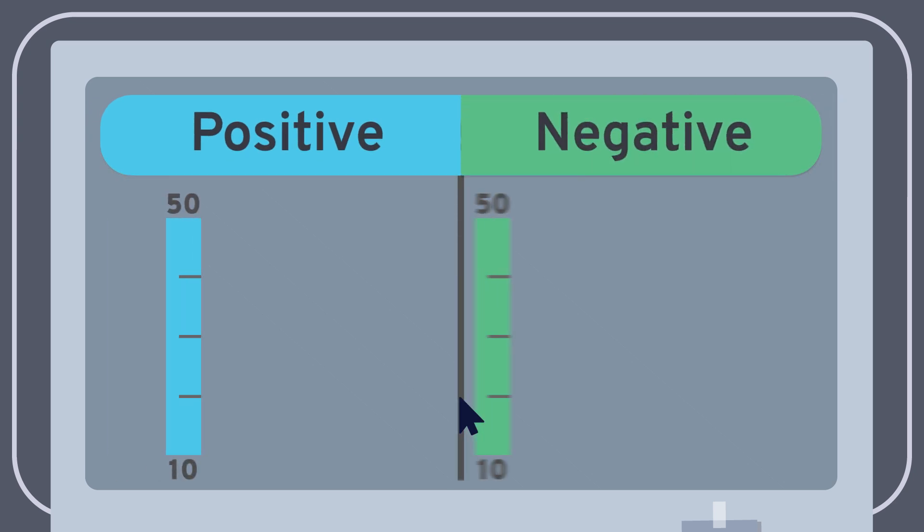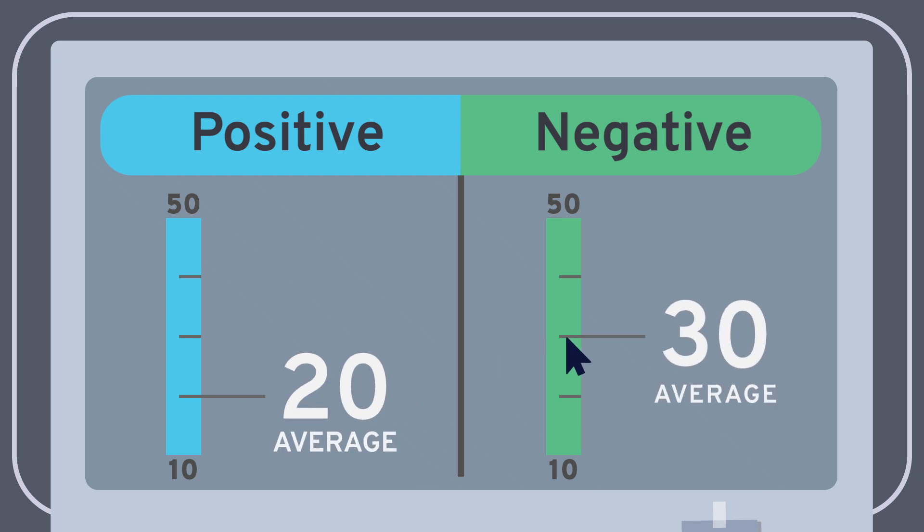Adding up her answers separately for the positive and negative emotions, Maya got her two separate PANAS scores. Her positive affect score was indeed much lower than she'd like, only a 20 out of 50, while her negative affect score, 30 out of 50, was pretty high.